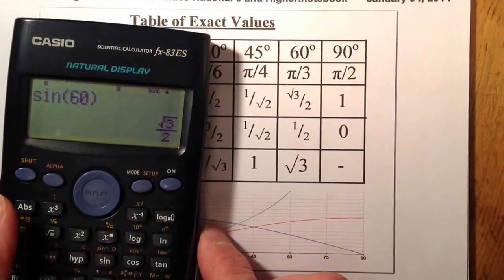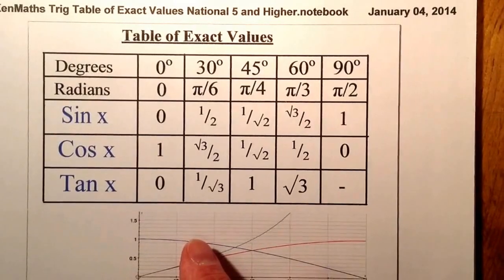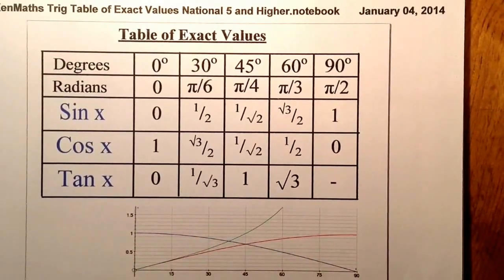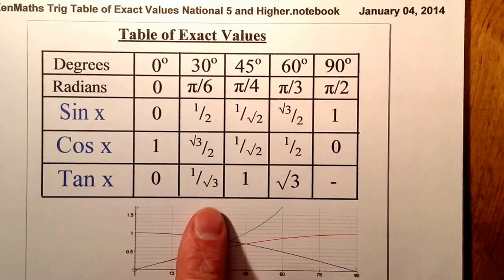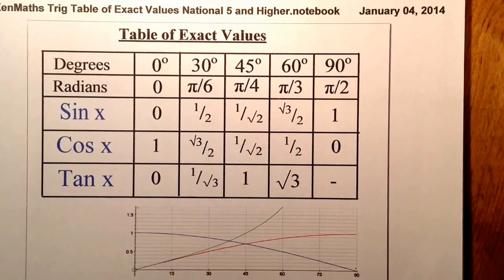These are some exact values that you really should know in order to answer some of the questions you're certainly going to be posed. I'm going to look at it in three ways. The first way is to memorise and remember the values in the table. The second method is a way of creating the table from quite a simple method. And the third method is to use some triangles to work out exact values from there.